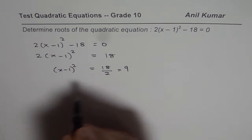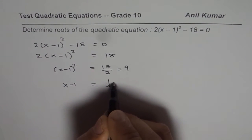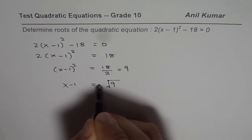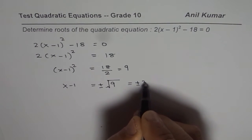Now square root both sides. So we have x minus 1 equals to square root of 9. Whenever you do square root, you have to write plus and minus. And you know square root of 9 is 3, so we will write plus and minus 3.